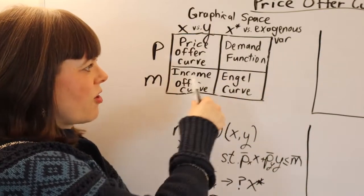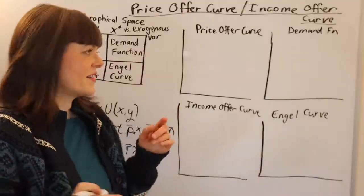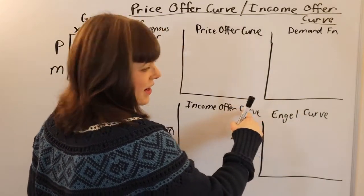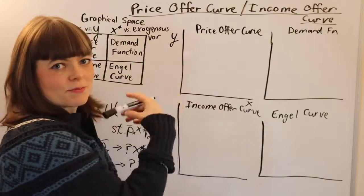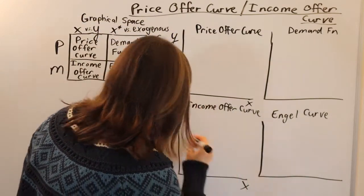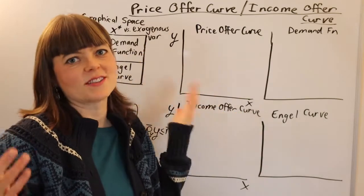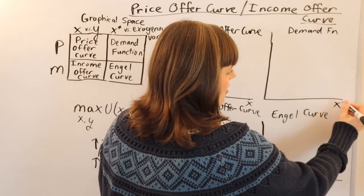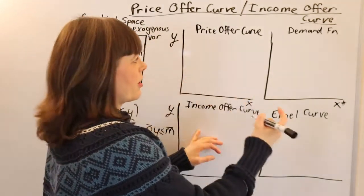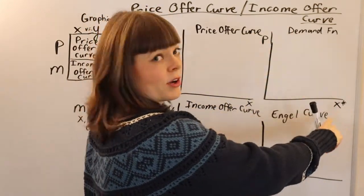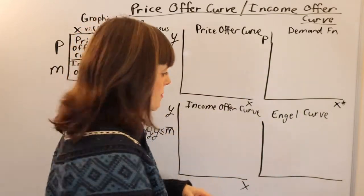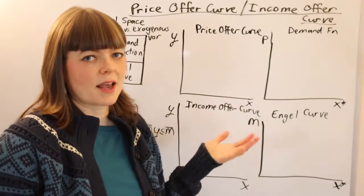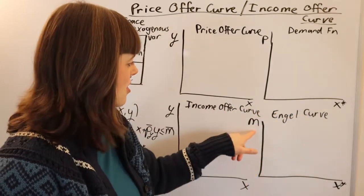So I'm going to draw one graph for each of these functions. We know the two offer curves are going to be in the space of good x — whether that's chocolate or bananas — versus good y, maybe books or CDs. Both offer curves will be in that space, where we graph budget constraints and indifference curves. Then the axes for the other curves are going to be x-star versus price for the demand function, and x-star versus m — a person's income — for the Engel curve.